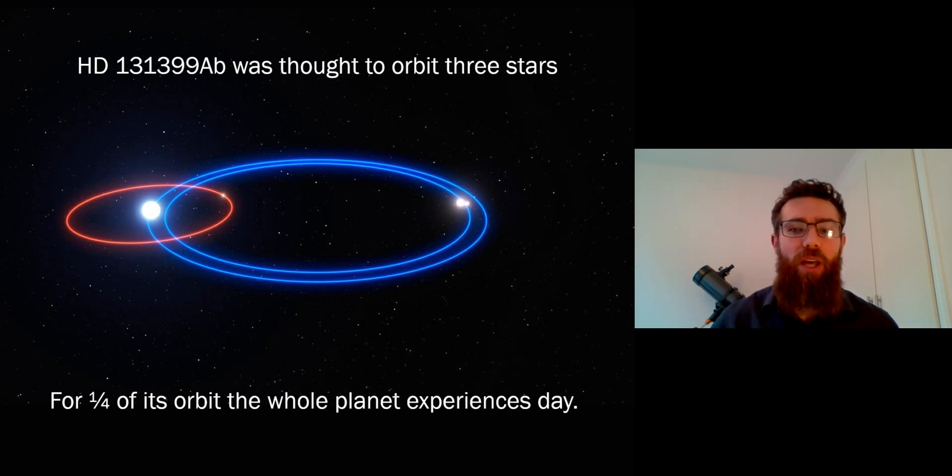But if it was a real planet, this gives you an idea of the orbit it would most likely have had, which is actually the red circle here, and the blue ones represent the orbits of the actual stars themselves.